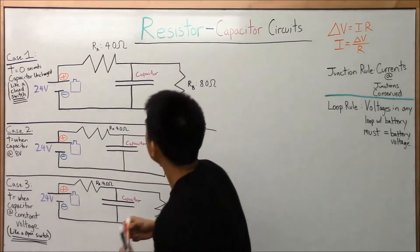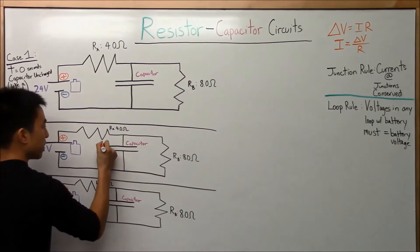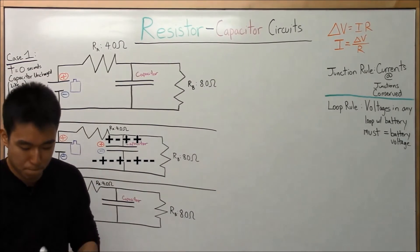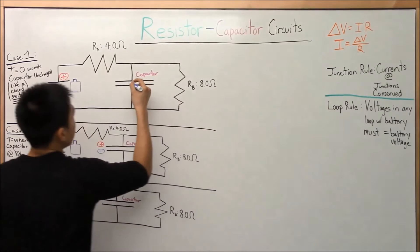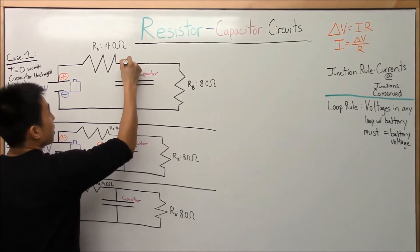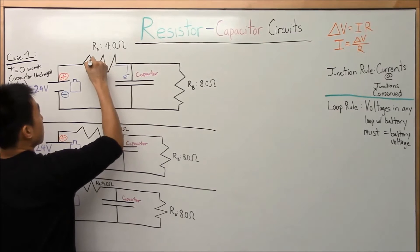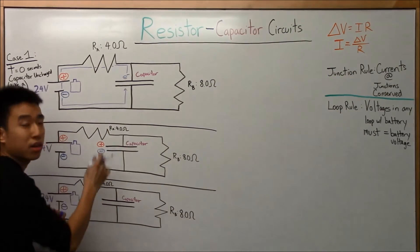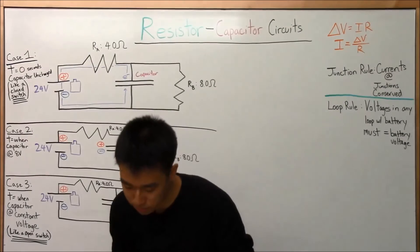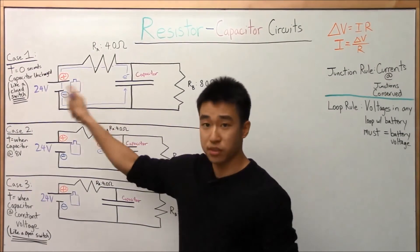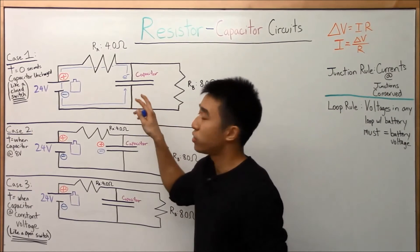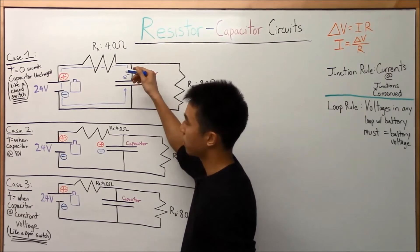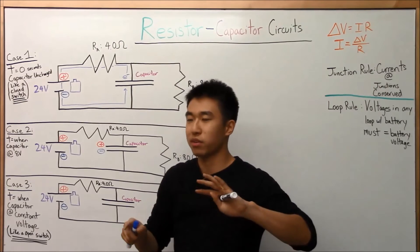So this top plate is going to become the positive plate of our capacitor, and this bottom plate is going to be the negative plate. The electron flow is: electrons going from the top plate, through resistor A, down here, through the battery, and then counterclockwise up to the bottom plate.